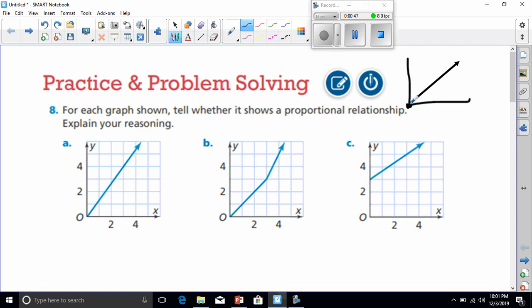All right, so let's take a look at these. The first one has our line going through the origin and straight, so this one is definitely proportional. Okay, and if I was to explain my reasoning, it would be because it's straight and goes through the origin.